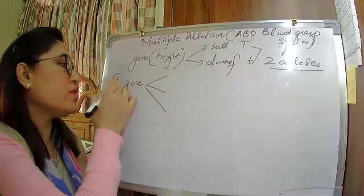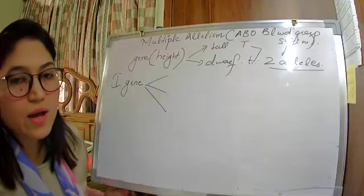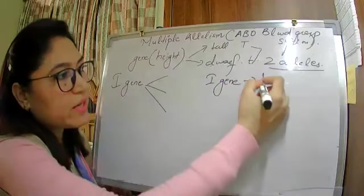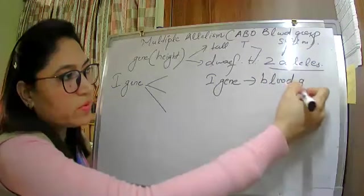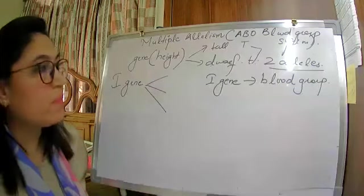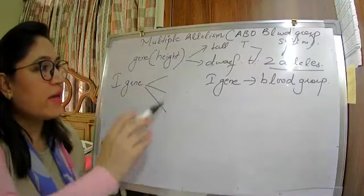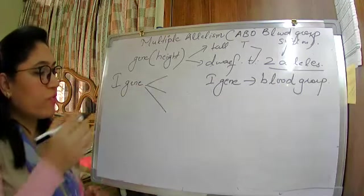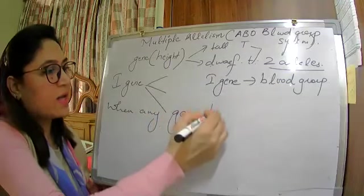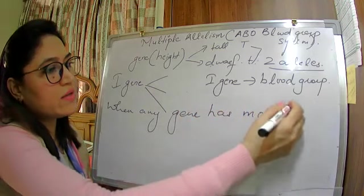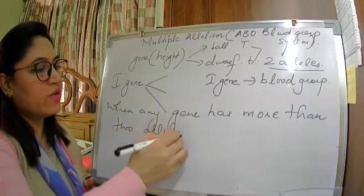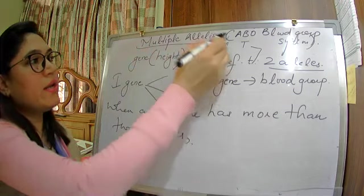The i-gene represents the human blood group. i-gene can have more than two alleles. When any gene has more than two alleles, we call it multiple alleles.